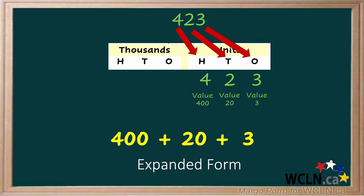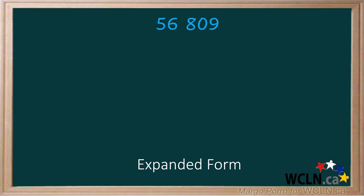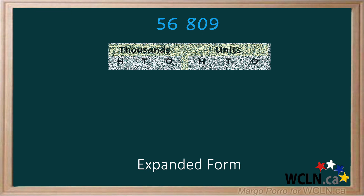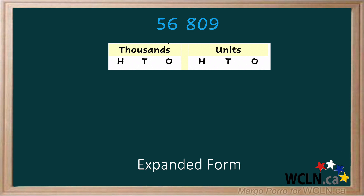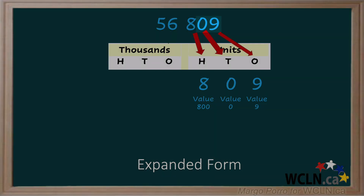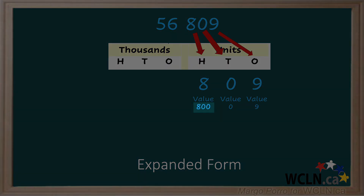Let's try our larger number: 56,809. Right now it's written in standard form, so we need to expand it. First, think about the place value and actual value of each digit. The 9 is in the ones place and has a value of 9. The 0 is in the tens place and has no value. However, in standard form it's an important placeholder so the numbers around it land in the correct places. The 8 is in the hundreds place and has a value of 800. Notice there are two digits after the 8 in the number and two zeros after the 8 when giving its value.